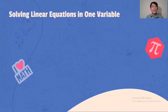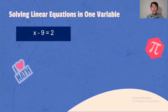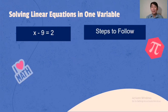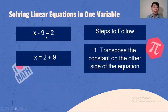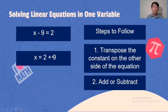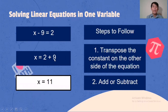Let's try another example: x - 9 = 2. Transpose the constant on the other side of the equation. We will be transposing negative 9, so it becomes positive 9. x = 2 + 9. Then add or subtract: 2 plus 9 is 11. Our final answer is x = 11. To check: 11 minus 9 equals 2, which is equal to 2. Correct.